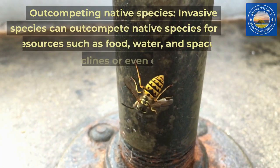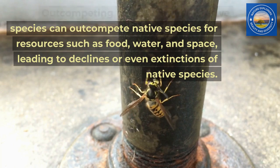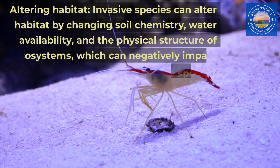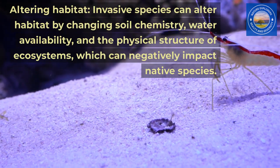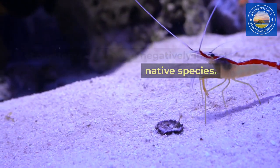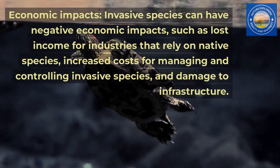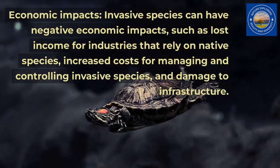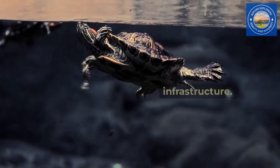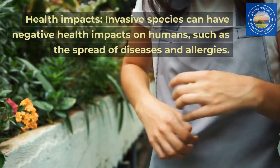Invasive species can outcompete native species for resources such as food, water, and space, leading to declines or even extinctions of native species. They can also alter habitat by changing soil chemistry, water availability, and the physical structure of ecosystems, which can negatively impact native species. Invasive species can have negative economic impacts, such as lost income for industries that rely on native species, increased costs for managing and controlling invasive species, and damage to infrastructure. They can also have negative health impacts on humans, such as the spread of diseases and allergies.